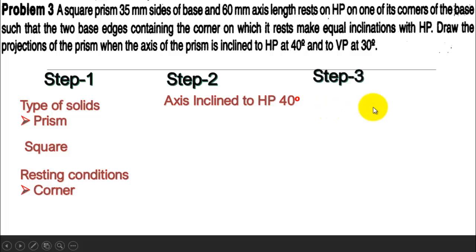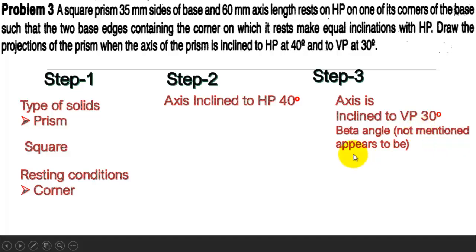Step 3: The axis is inclined to VP at 30 degrees, so we need to find the beta angle, as it is not directly mentioned.